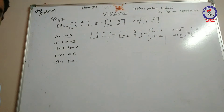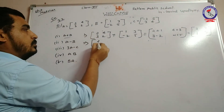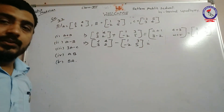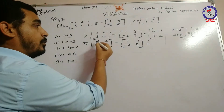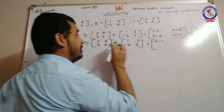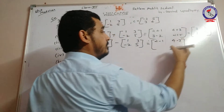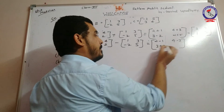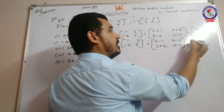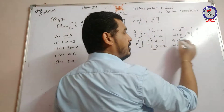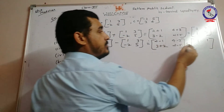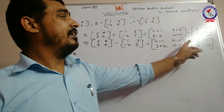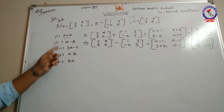Next, A minus B. It is also very simple: [2, 3; 4, 2] minus [1, -2; 3, 5]. That is subtraction of corresponding values — 2-1, 4-3, 3-(-2) which is 3+2, and 2-5. So the answer will be: 1, 1, 5, -3. Final answer of A minus B will be [1, 1; 5, -3].